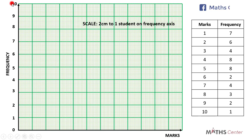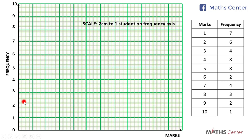We use that to number our frequency axis. We now need to determine the width of the bars and the spaces between them. In total we have 10 bars, which is quite a lot. For this bar chart I'm going to leave three minor divisions between the bars and each bar will occupy seven minor divisions — three small boxes between bars and seven small boxes per bar.